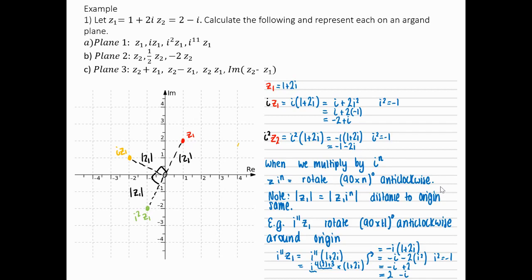Let's look at this. So pretend you go 90 degrees, 11 times anticlockwise. We go 2 across, 1 down. And that dot is the number i to the 11 Z1.